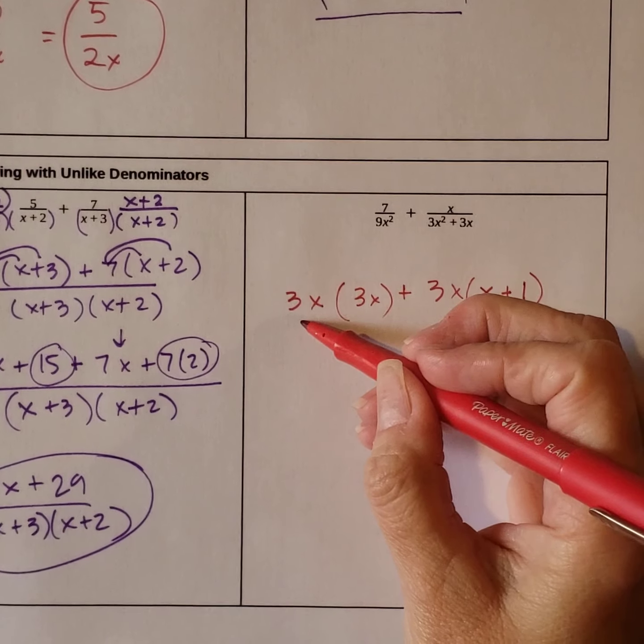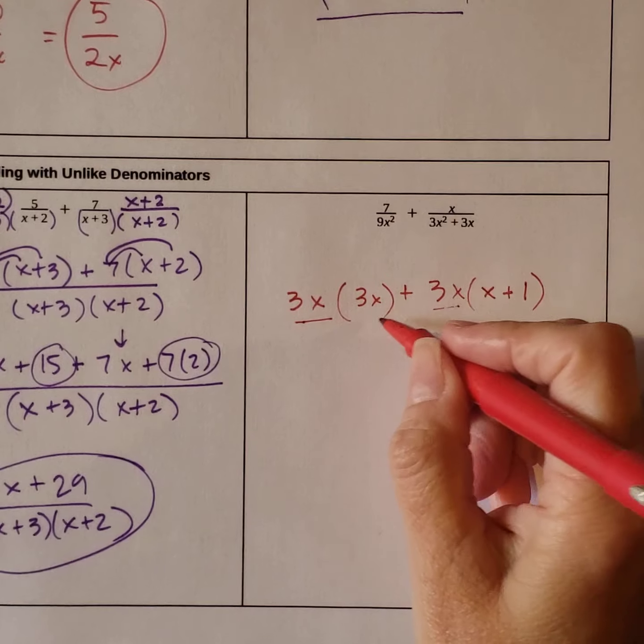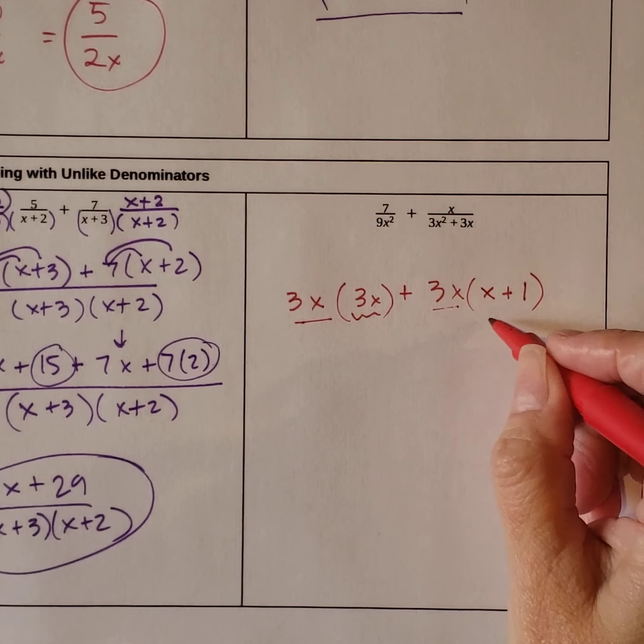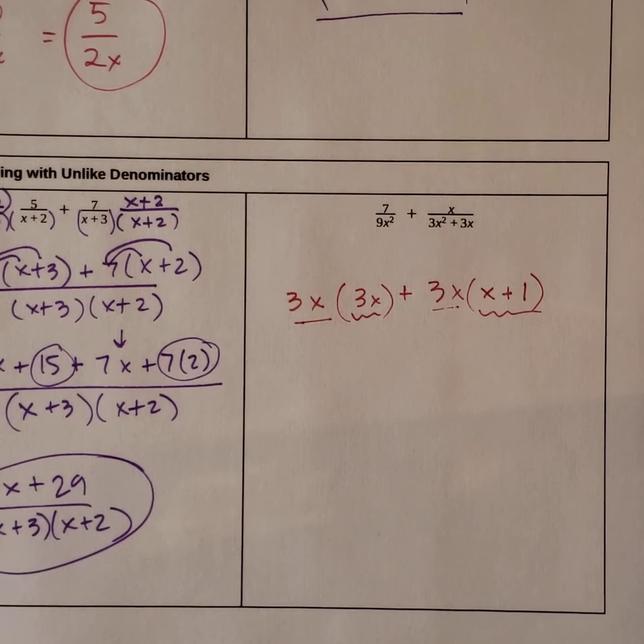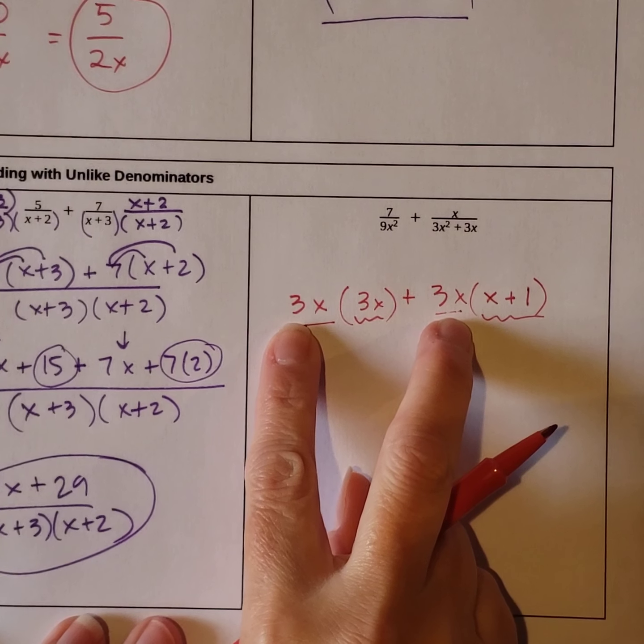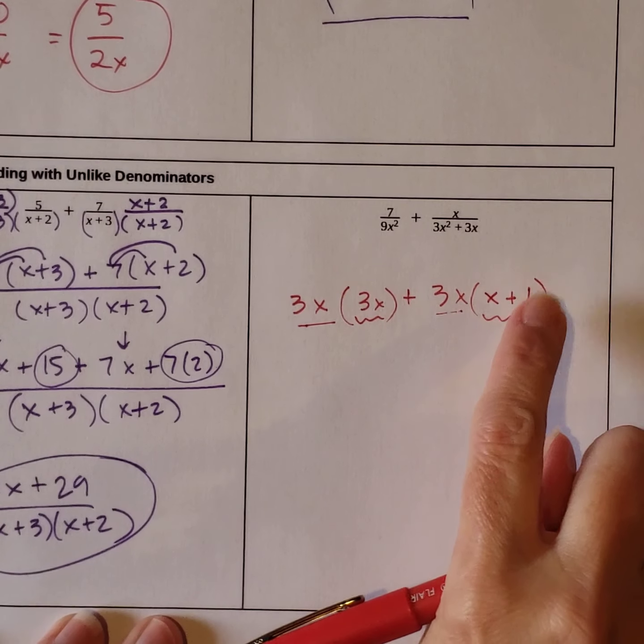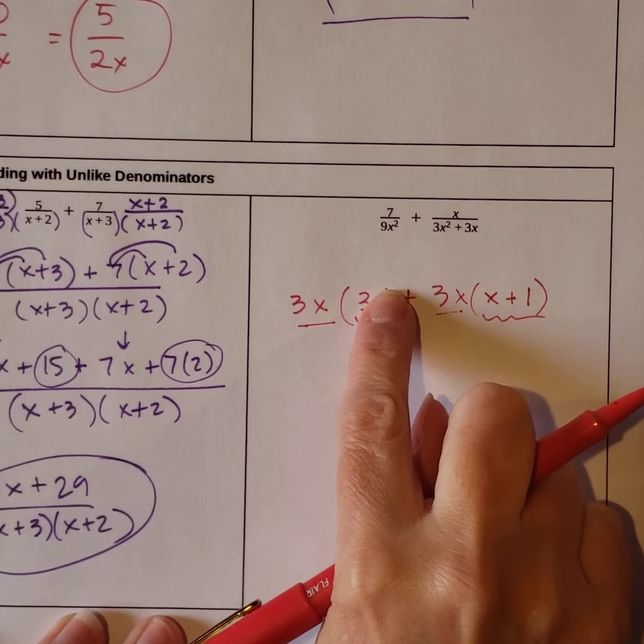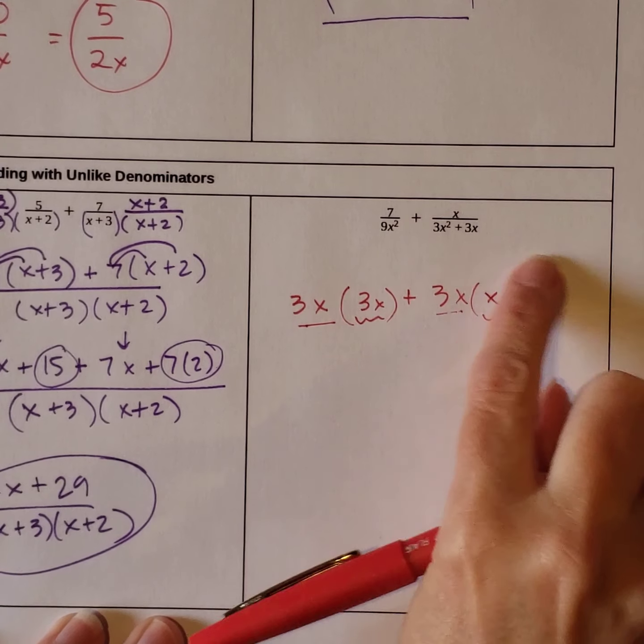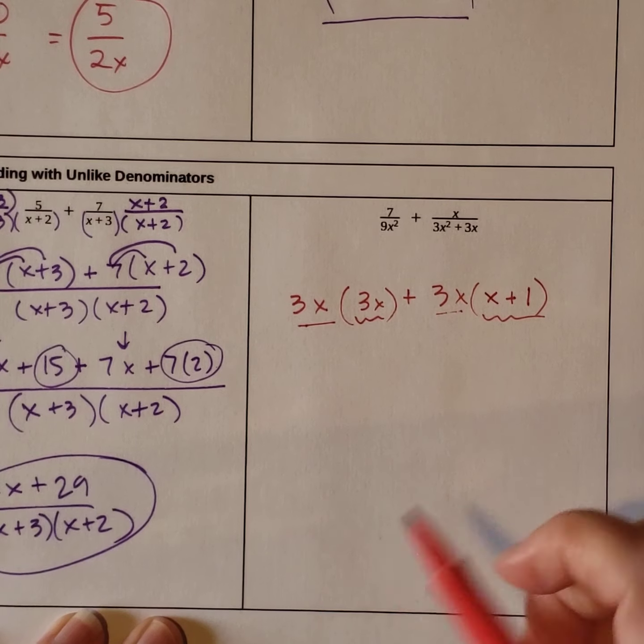So what they have in common is 3x and 3x. What they don't have in common is this 3x and this x plus 1. So they have this already in common. So that means we have to multiply the right side by this 3x, because they don't have it in common, and we have to multiply the left side by the x plus 1. And that will give us our common denominator.